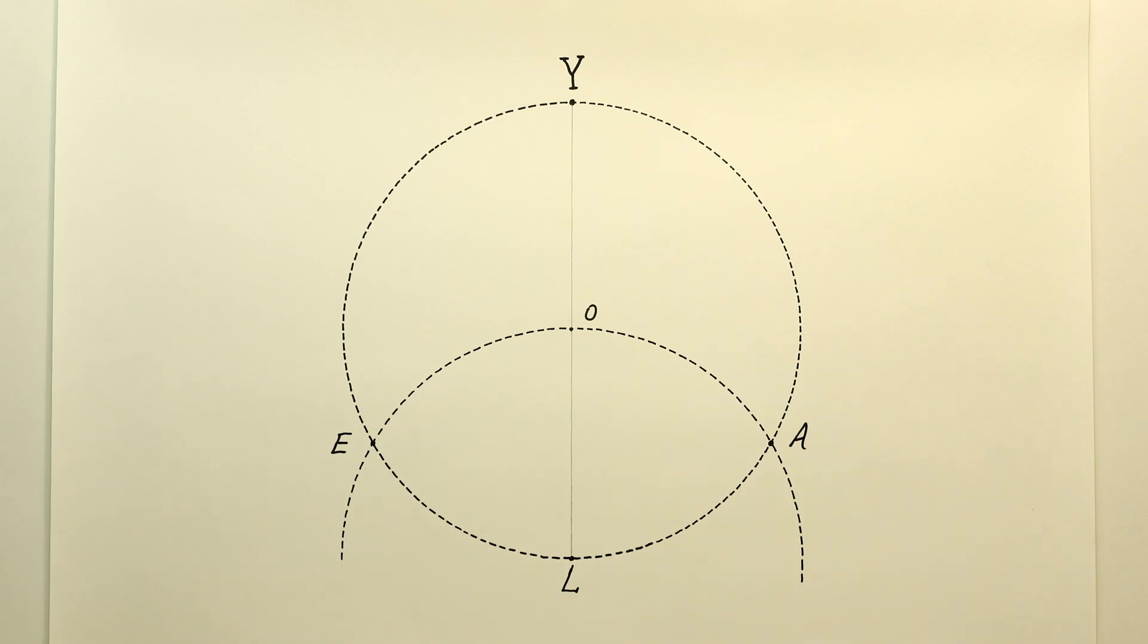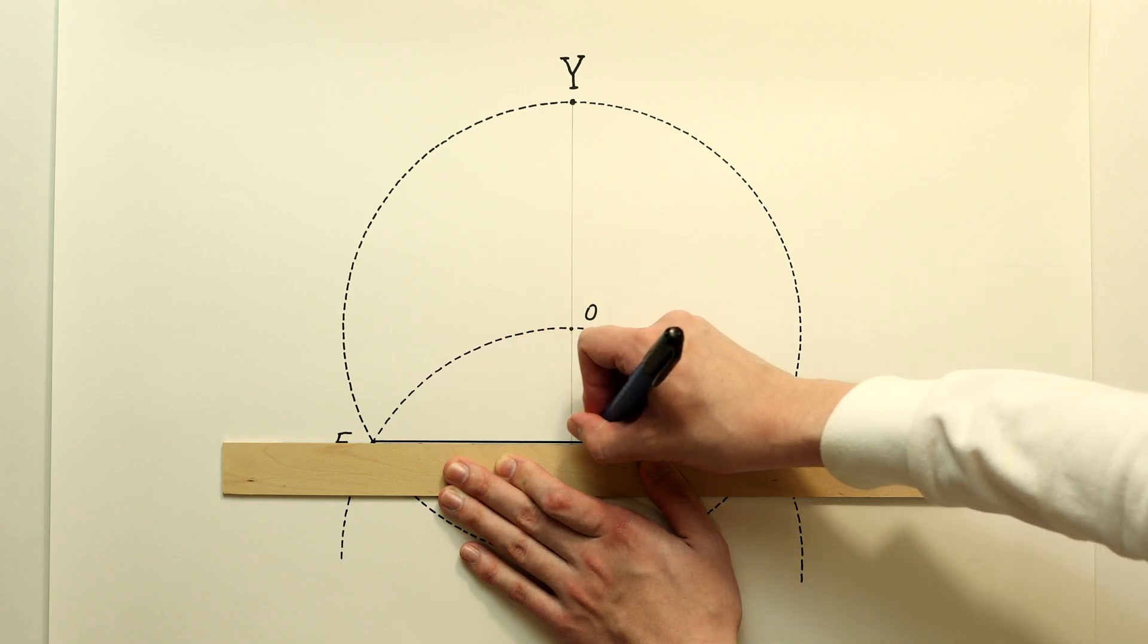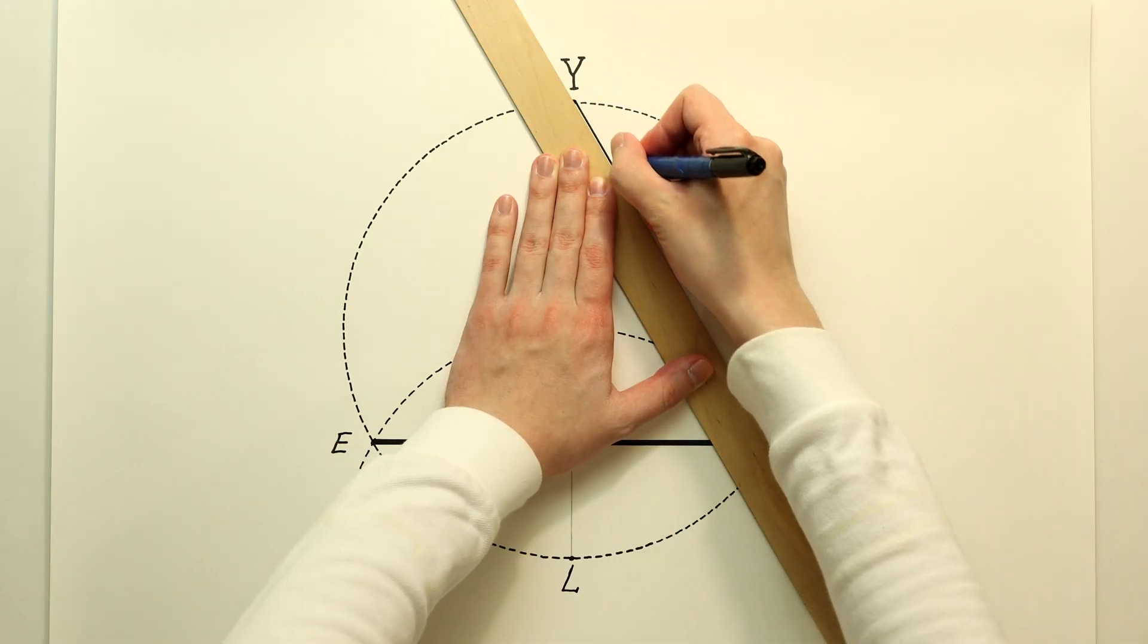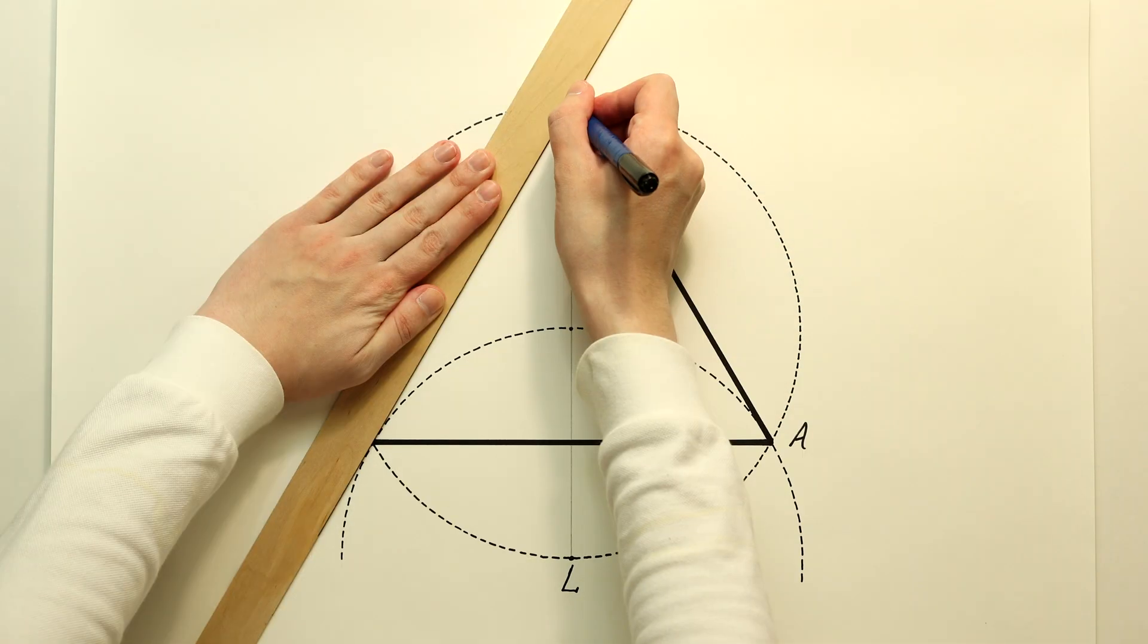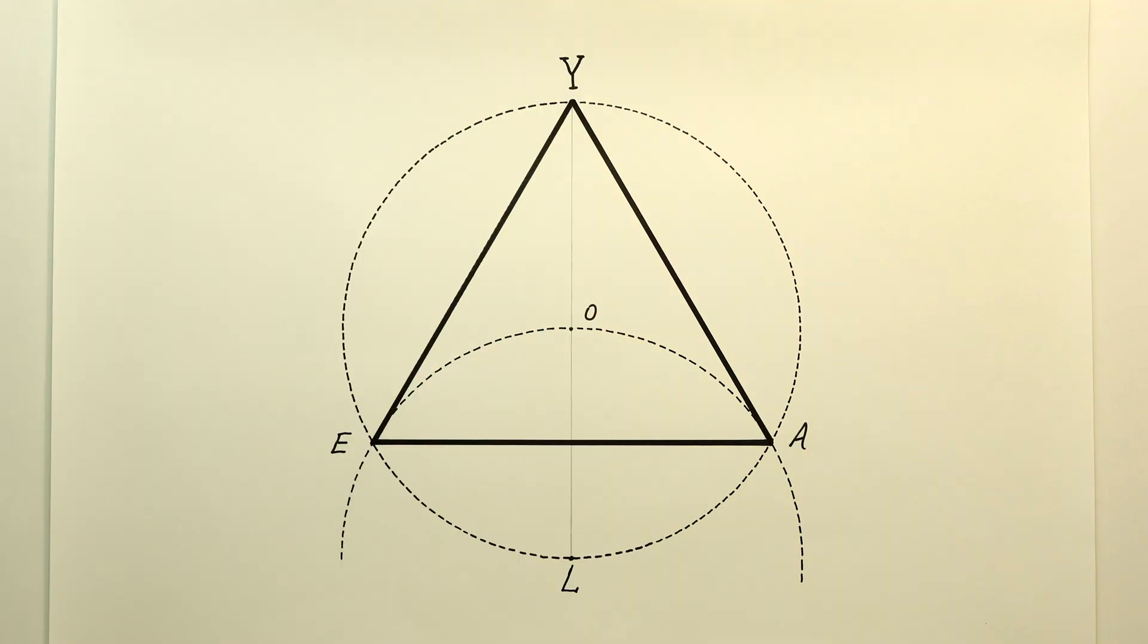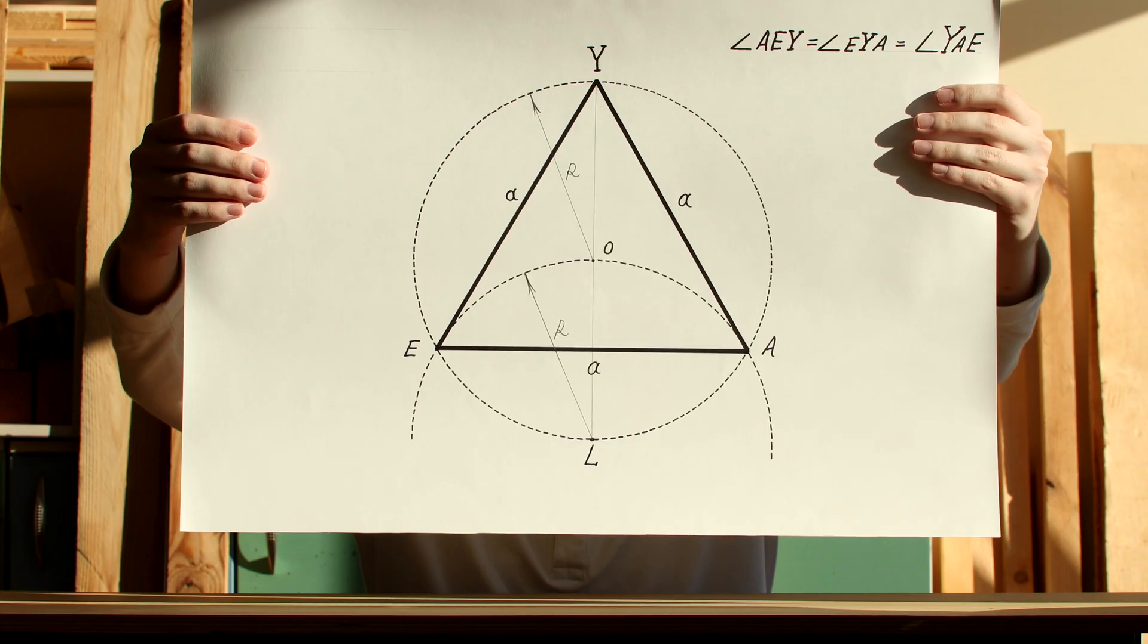I will give these intersection points the names point E and point A. Point E, point Y, and point A are the vertex points of an equilateral triangle.